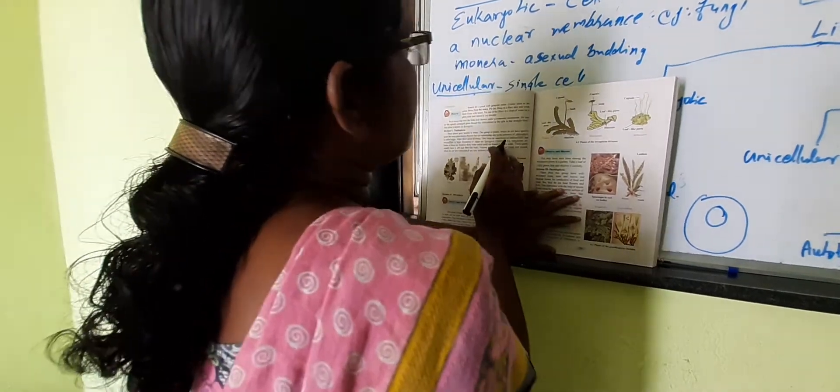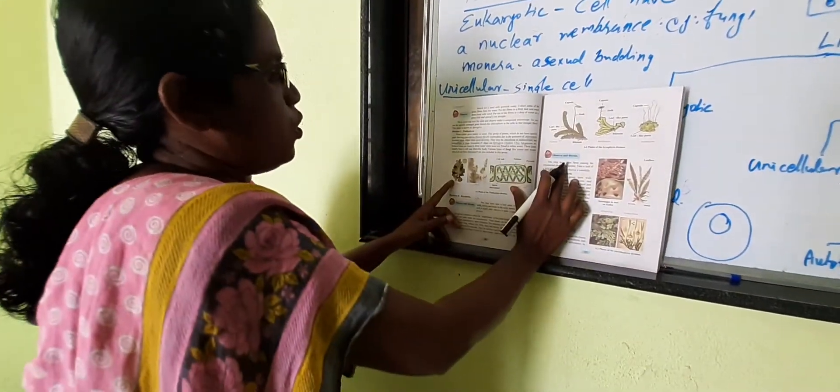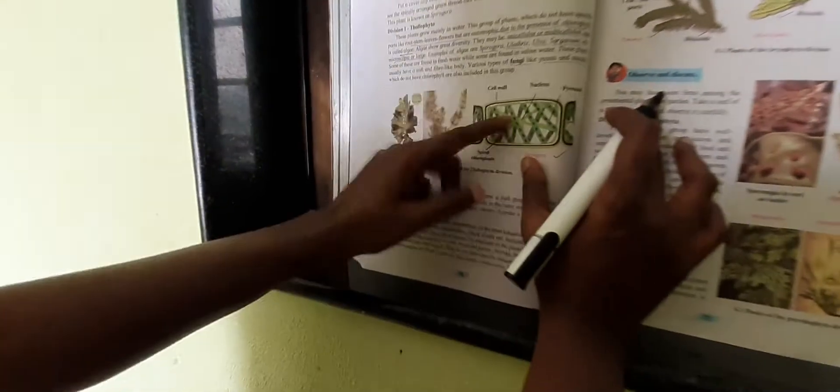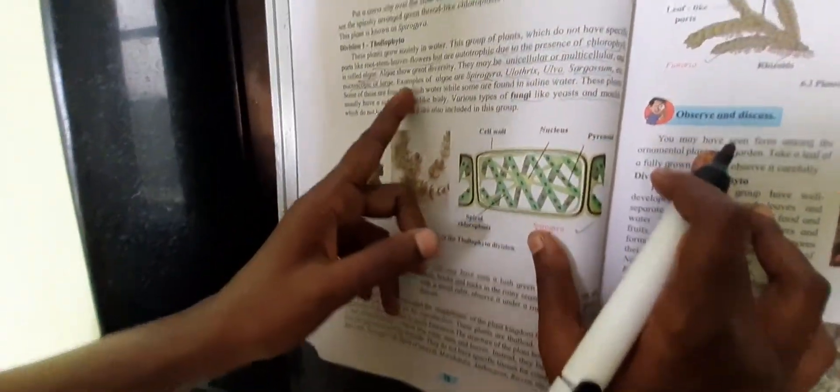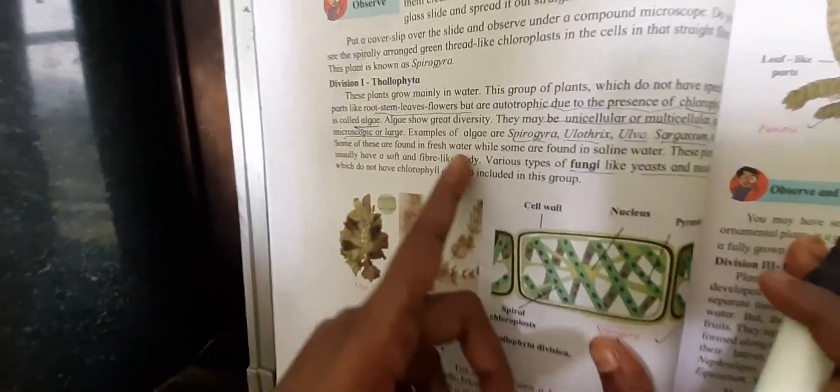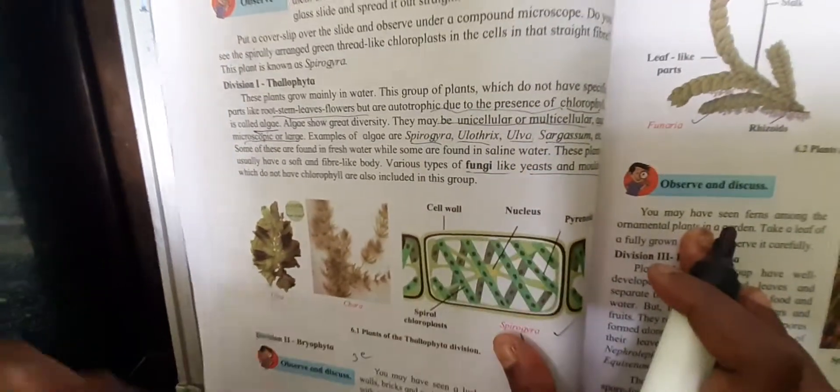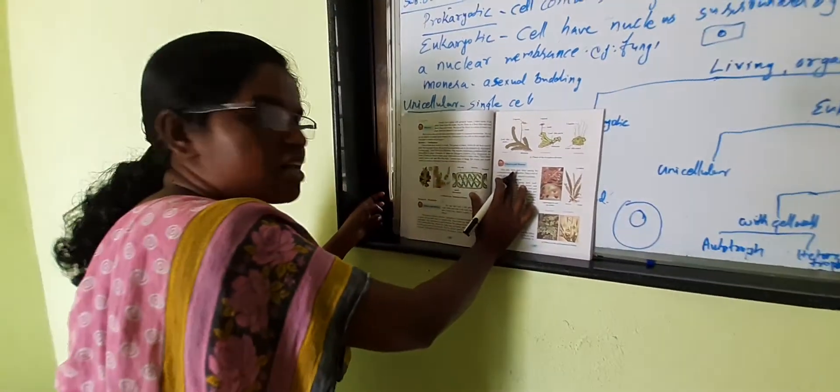That is Sargassum, etc. Here, Ulva and Chara are in the Thalophyte division, Spirogyra, okay. Some of these are found in various places, some found in saline water, some in freshwater. Some are in saline water.